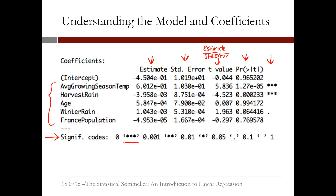Three stars corresponds to probability values between 0 and 0.001, or the smallest possible probabilities. Two stars is also very significant, and corresponds to a probability between 0.001 and 0.01. One star is also significant, and corresponds to a probability between 0.01 and 0.05. A period, or dot, means that the variable is almost significant, and corresponds to a probability between 0.05 and 0.1. When we ask you to list the significant variables, we will usually not include these. Nothing at the end of a row means that the variable is not significant. Age and France population are both insignificant in our model.